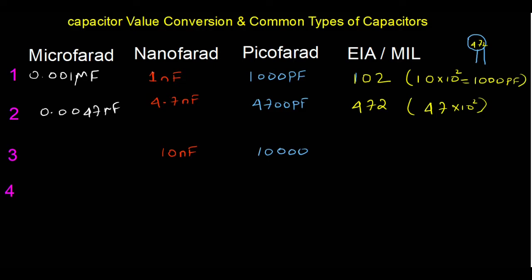For the EIA or mil code (Electronics Industries Alliance code), write the first two digits followed by the multiplier. 10,000 pF is written as 103. We can also express 10,000 pF as 10 kpF — using 'k' for thousand is perfectly valid.